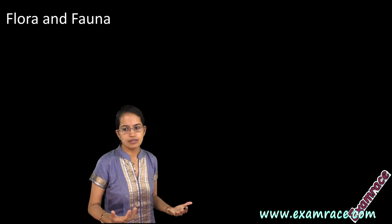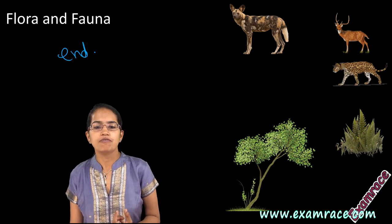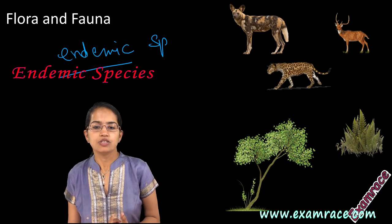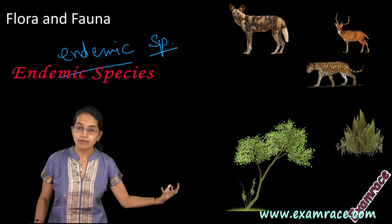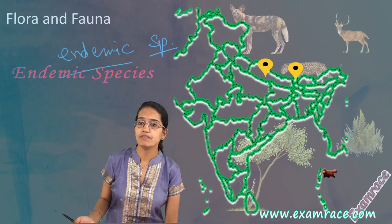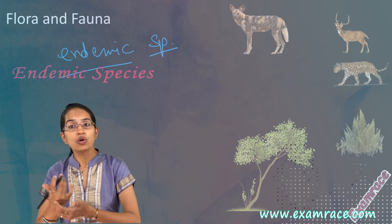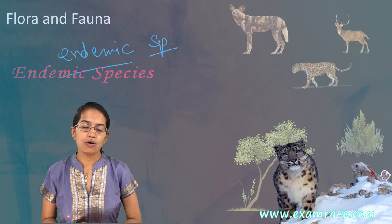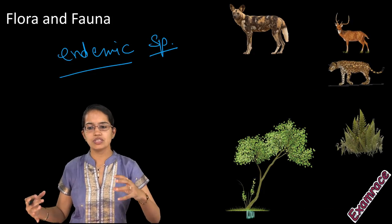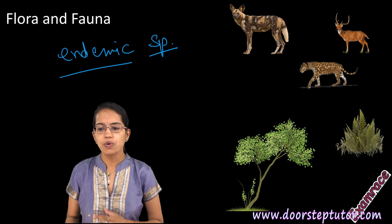Some species are very unique to specific regions. When a species is unique to a specific region, we call those endemic species. The Western Ghats have lots of endemic species. Similarly, in the regions of Sikkim and the Himalayan region, the red panda is endemic to that area — you won't find it in other parts of the world. Snow leopard is also specifically found in certain areas.